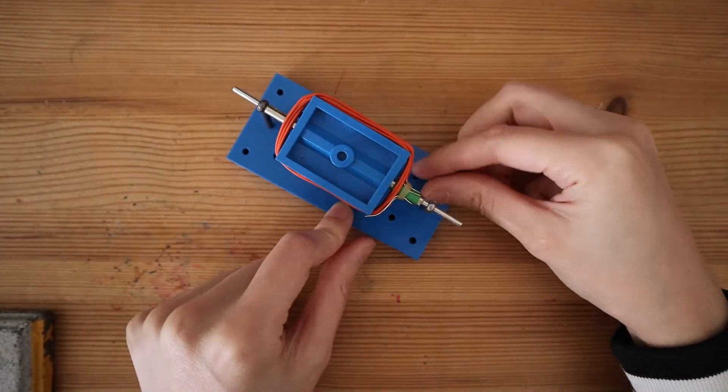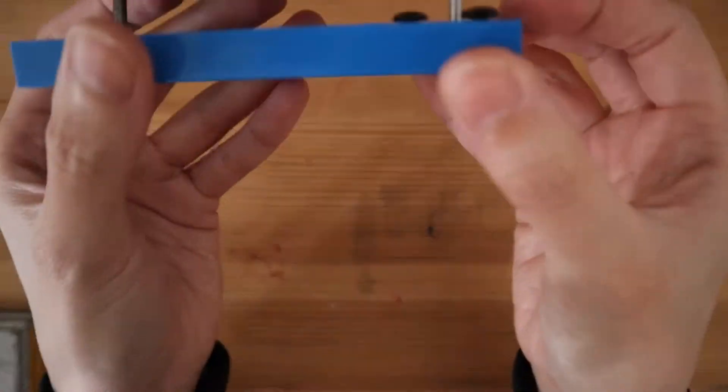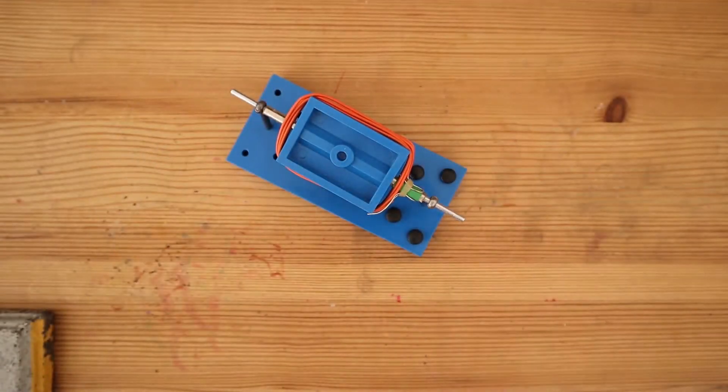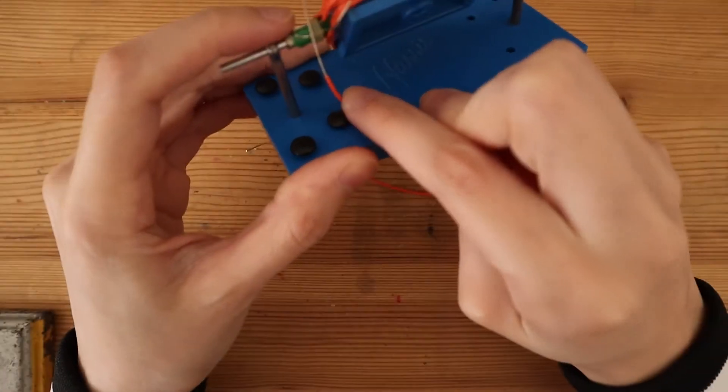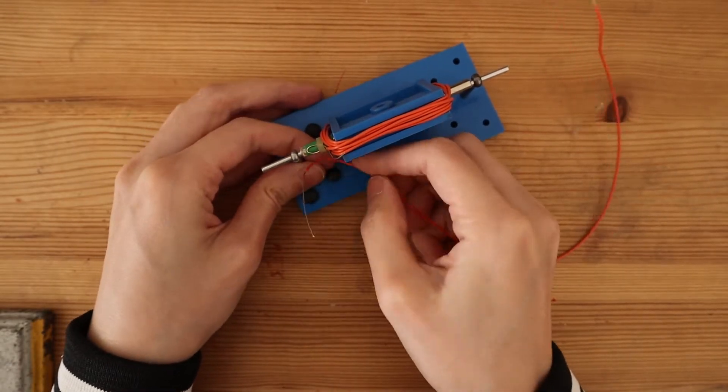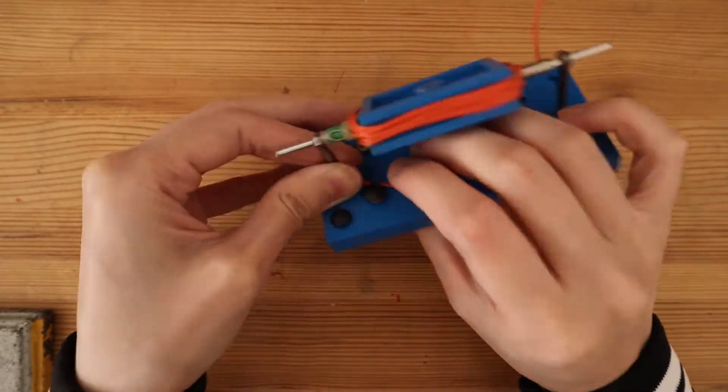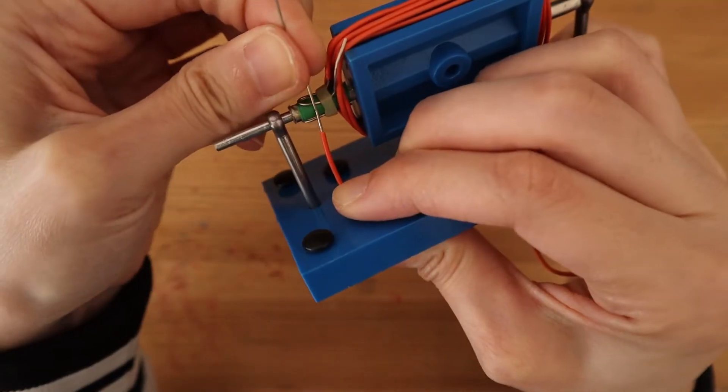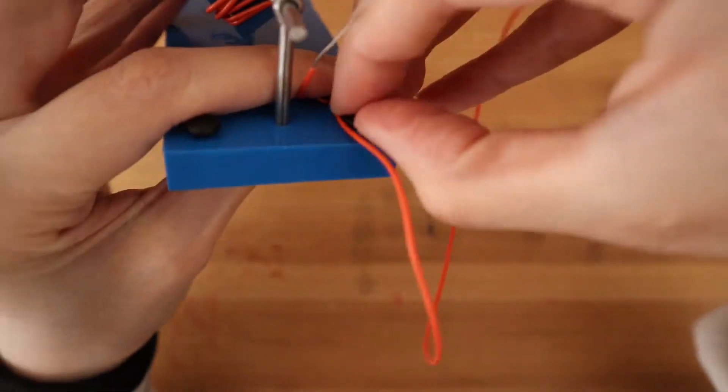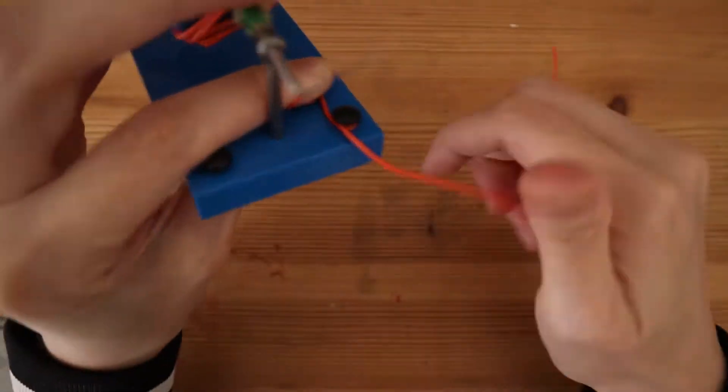Push the four rivets into the base. Loop one of the wires around and under the rivets. The uninsulated section needs to reach the split ring commutator. Do the same on the other side with the other wire.